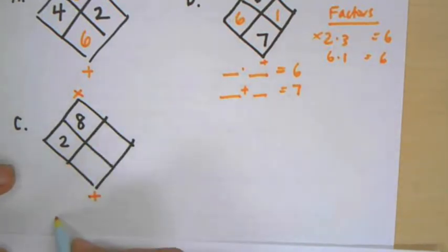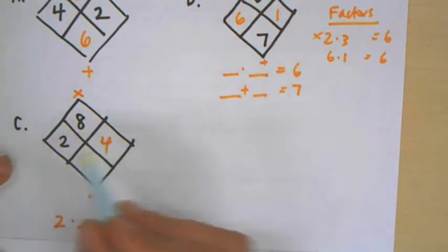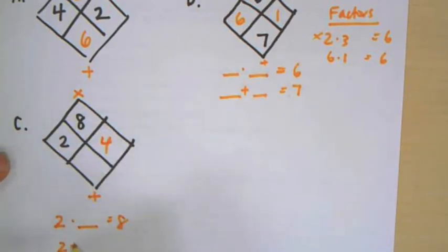But really, do we? Because what we're looking for is two times some number equals eight. Well, we know what that is. That's four. And then once I figured that number out, then I know that these two numbers added together give me the bottom number, which is six.